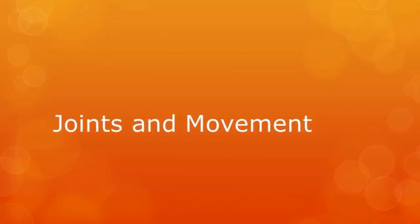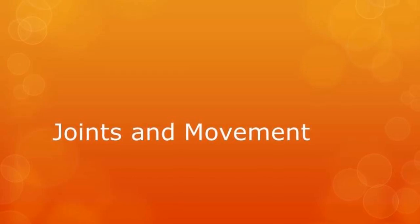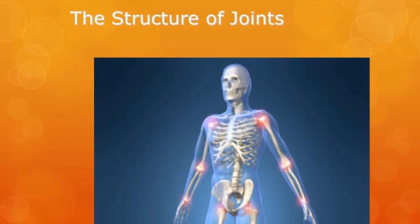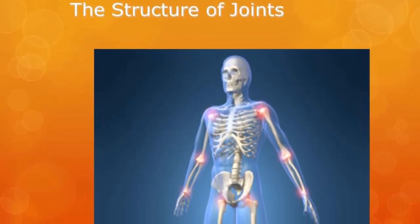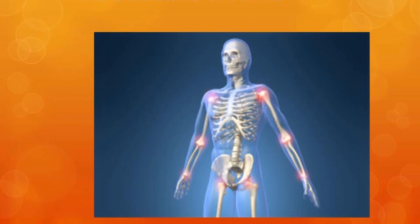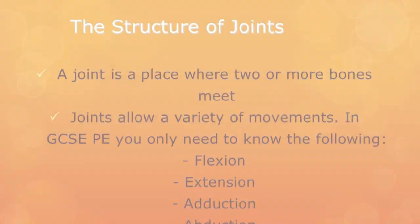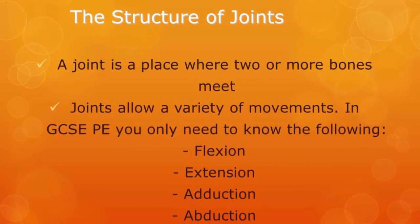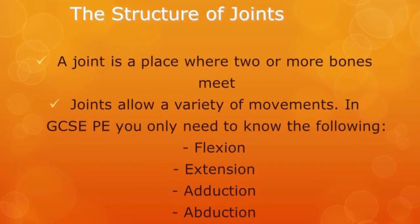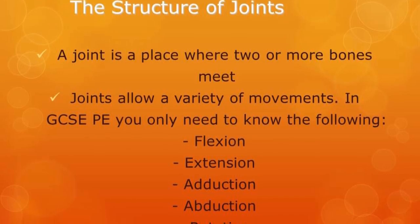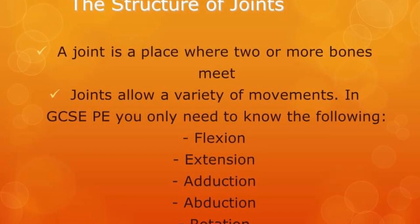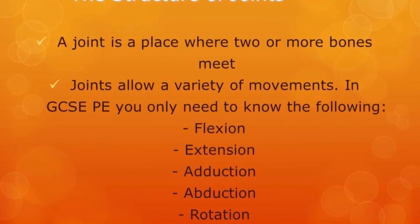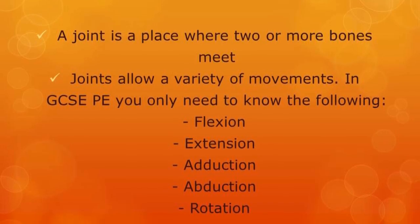Moving on to joints and movement — you need to know how to apply this to sports as well. A joint is a place where two or more bones meet, and joints allow a variety of movements. For GCSE PE, you only need to know flexion, extension, adduction, abduction, and rotation.